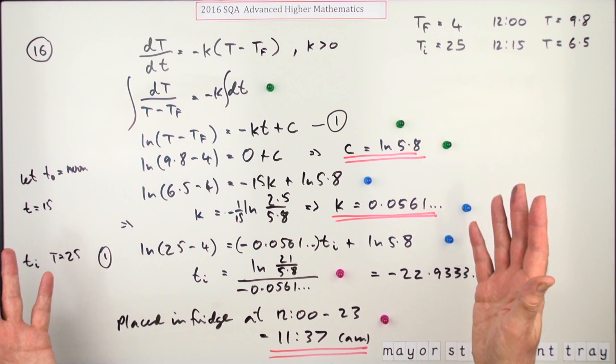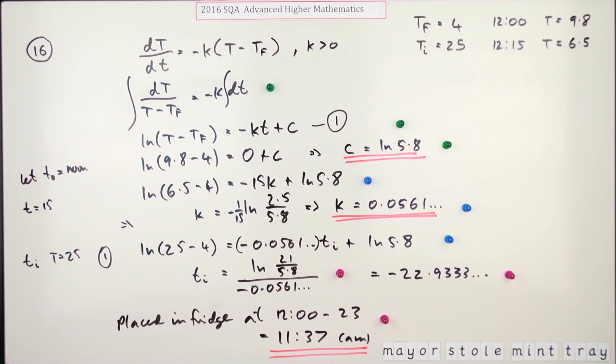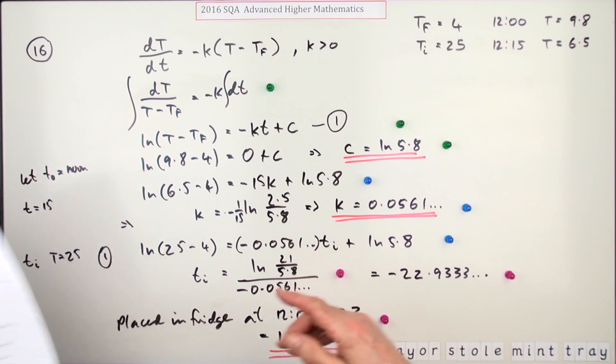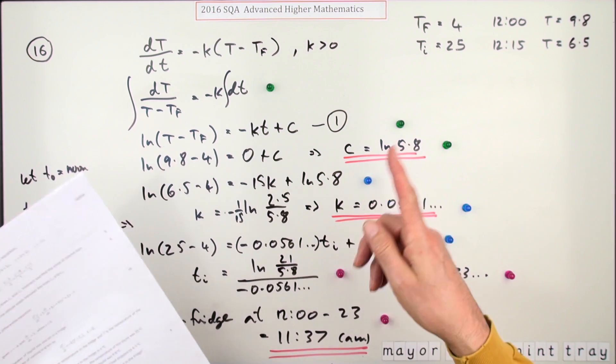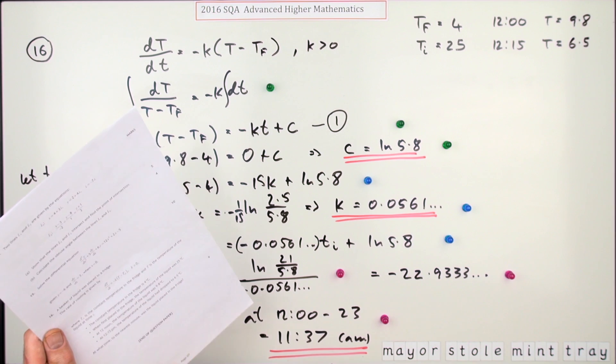That second approach was obviously a bit quicker because it avoided the simultaneous equations, but of course you had to take a little time at the start to decide on that alternative approach.